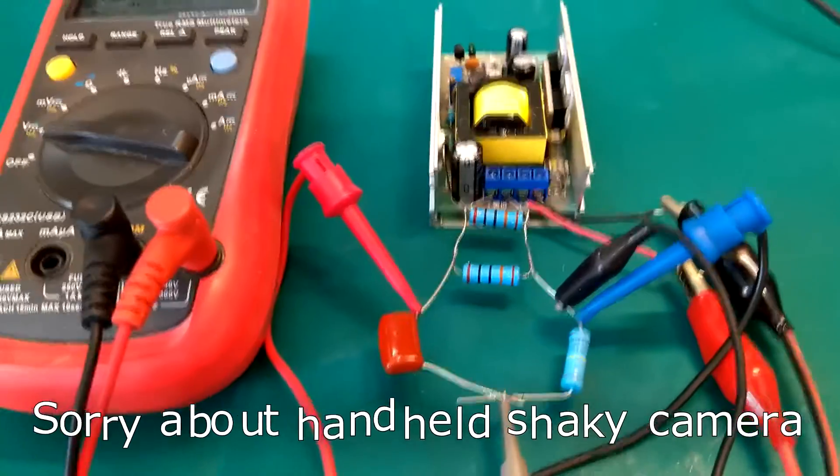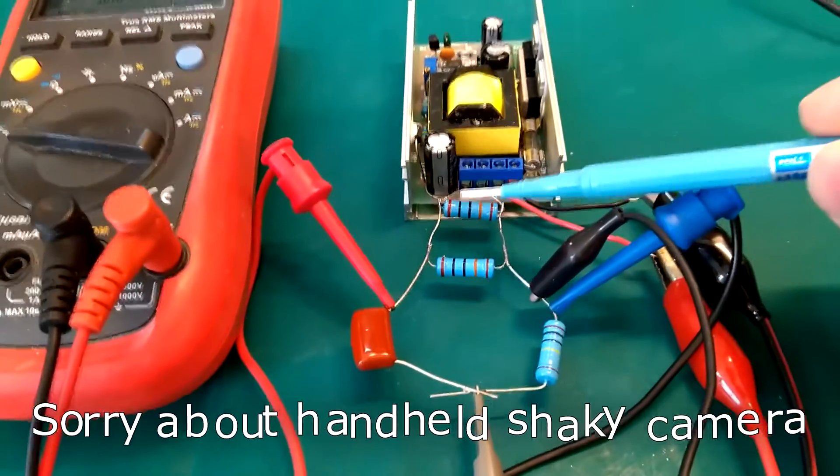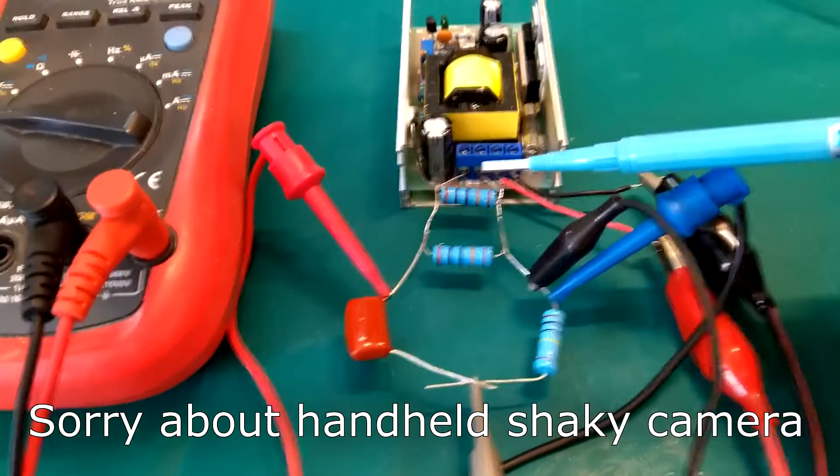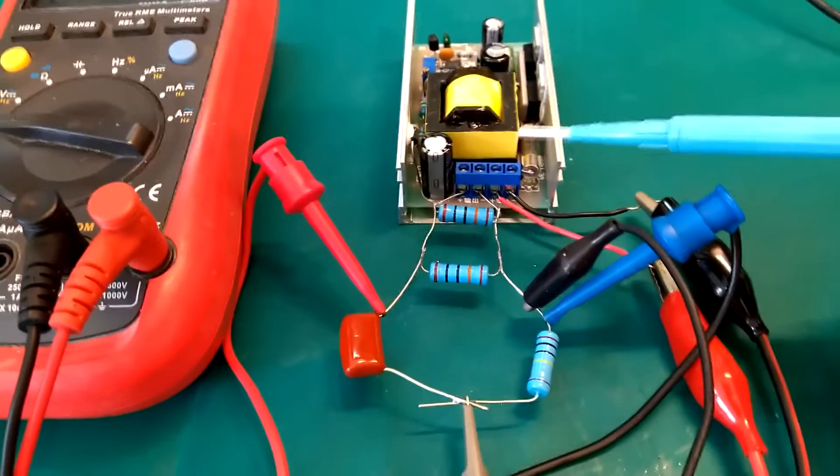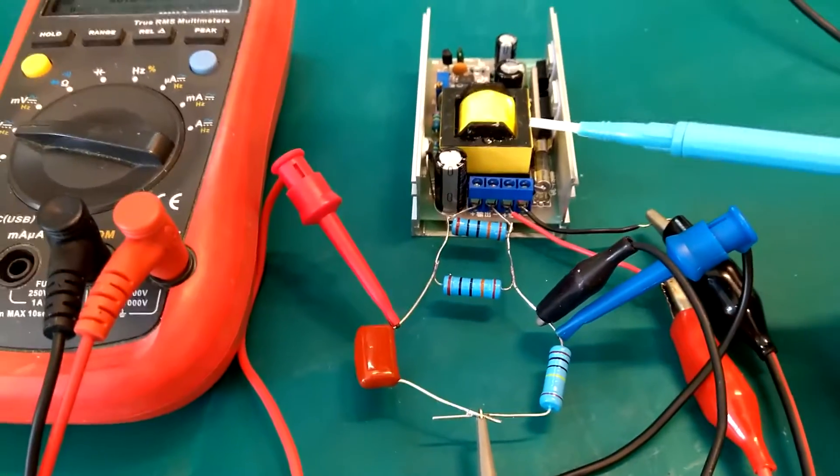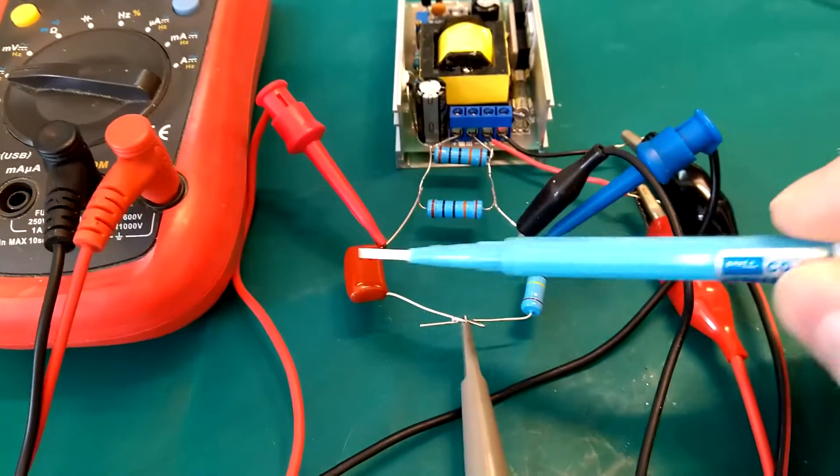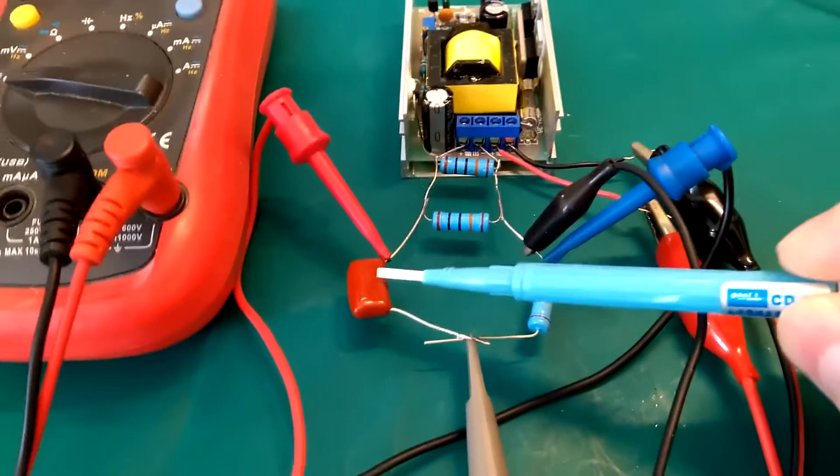Okay, so I've added a load. These two 100 kilo ohm resistors gives us a 50 kilo ohm load. So at 400 volts that will be like 8 milliamps. And besides that I've added a capacitor over here.